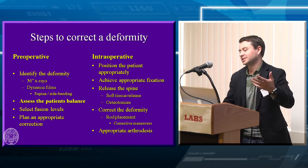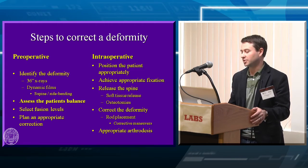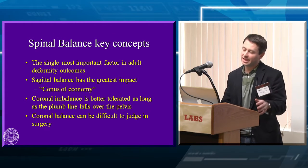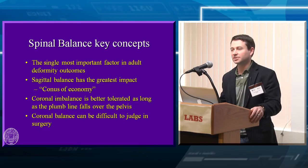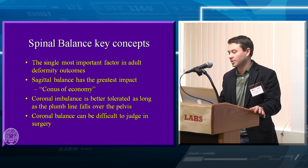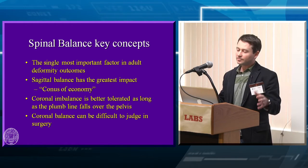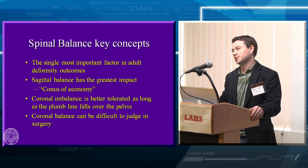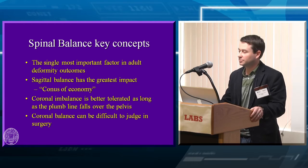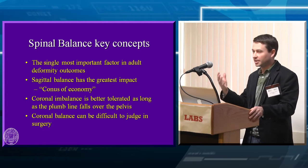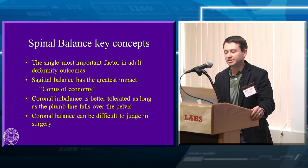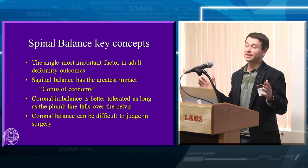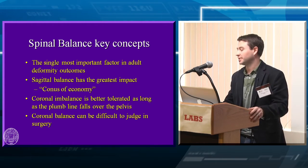I always talk about steps to correct a deformity, and today we're just going to be talking about the assessment of balance. Key concepts for me: sagittal balance and spinal alignment is the single most important factor when talking about patients with deformity. It has the greatest impact on function. The term 'conus of economy' is a John Dubousset term people use because it's an elegant way of thinking about how people function and stand. Coronal balance is important, but being a little off in the coronal plane isn't that big a deal — being off in the sagittal plane is.